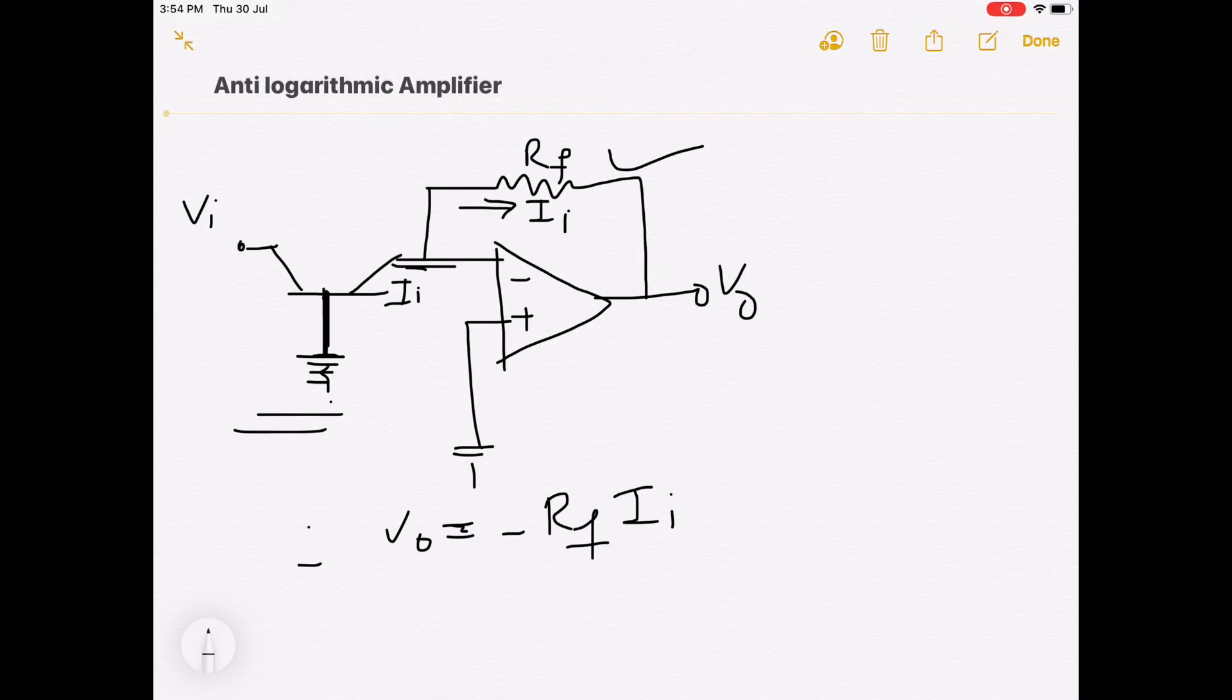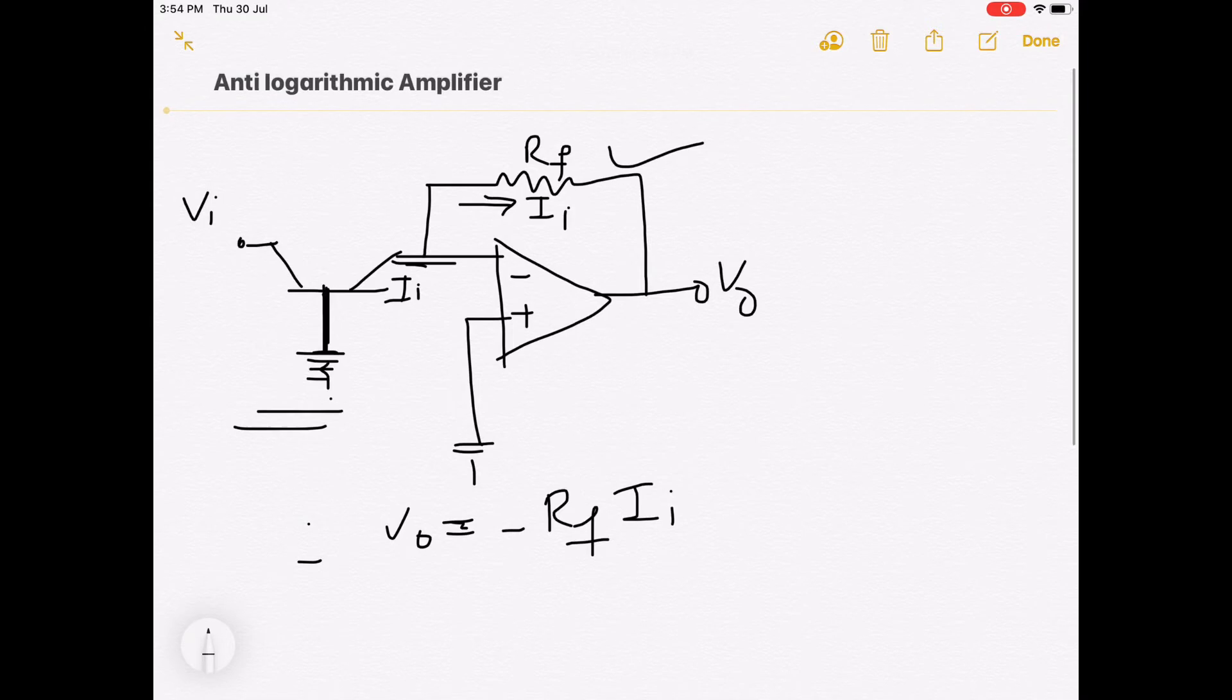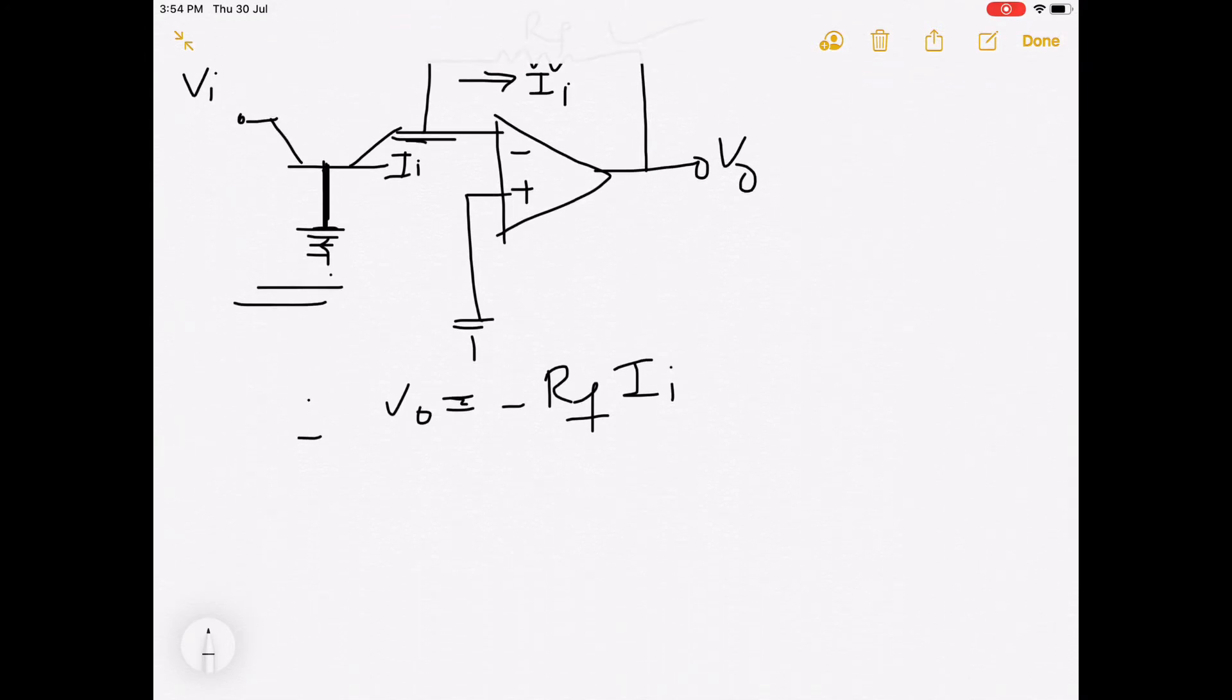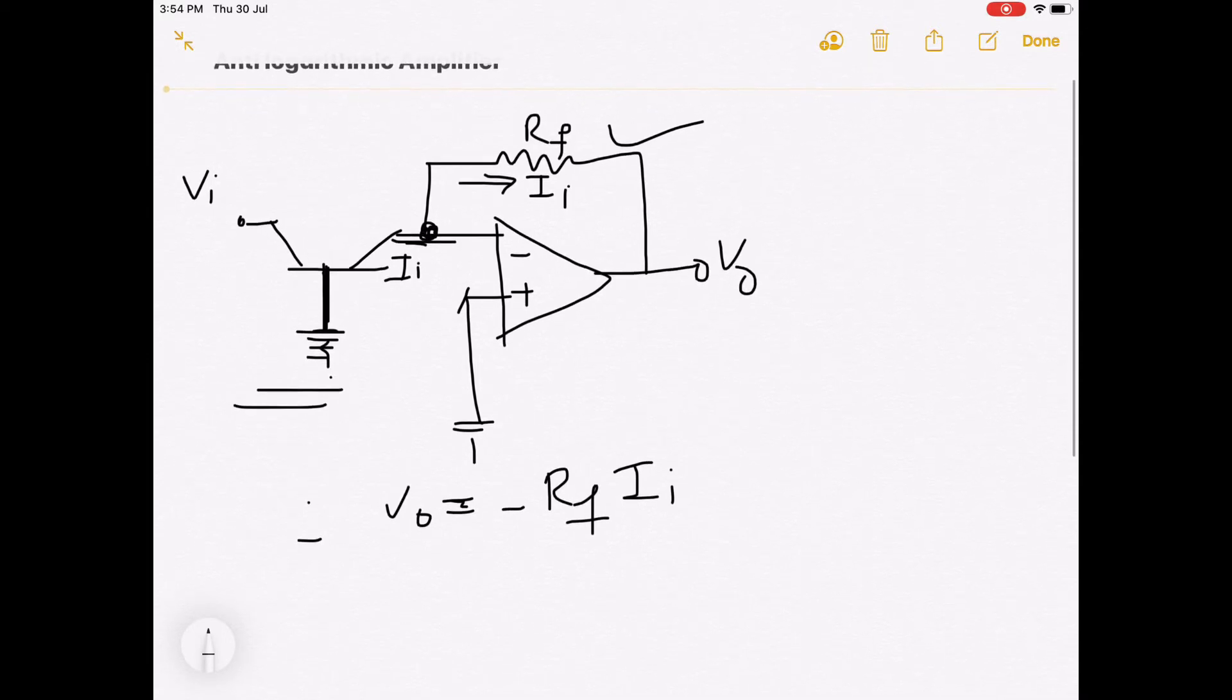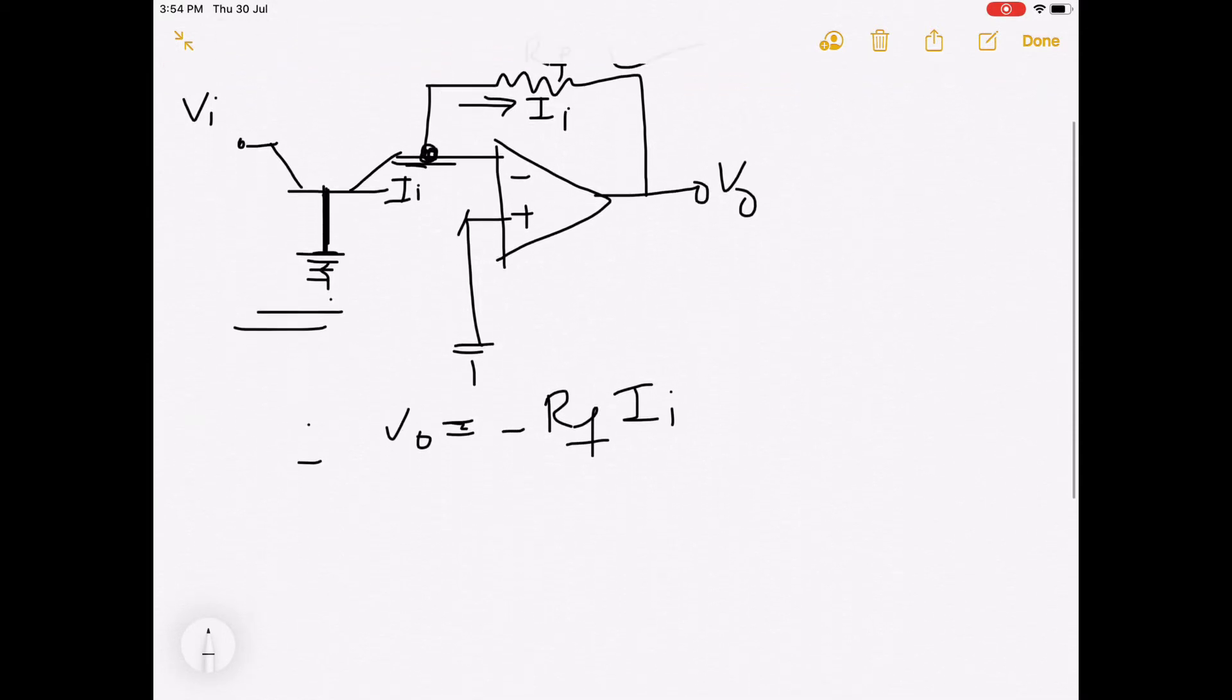Because your transistor is at the input, it is used to convert input voltage into input current with the log function. Due to the virtual ground concept, your non-inverting terminal is grounded, so this node is also at ground potential. That current will directly flow through RF. Vo can be written as minus RF into Ii.